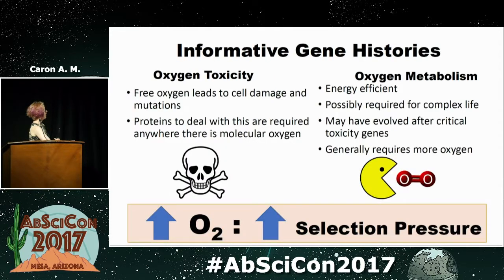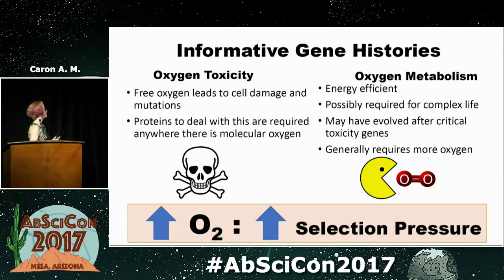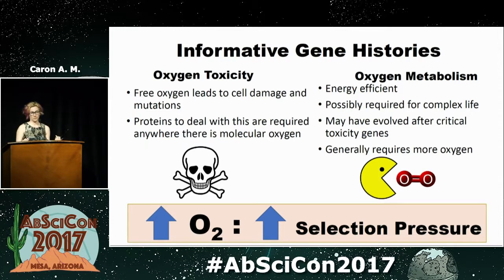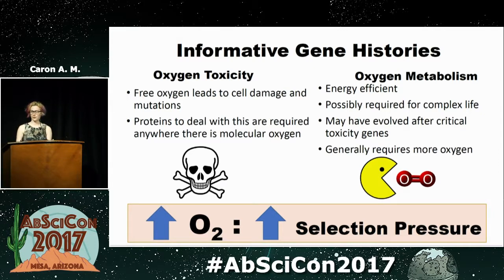We decided to attack this question by looking at really informative gene histories. For the question of oxygen, we can look at when genes that are involved in dealing with oxygen toxicity evolved. Oxygen is really dangerous — it damages your cells, it causes mutations — and you need to be able to deal with that if you're living in an oxic environment. These genes that can take superoxides and make them not destroy your organism are really important, and there'll be a really high selection pressure: any lineage that can deal with oxygen is going to survive much better than those that can't. So we should be able to see that in the history of these genes.